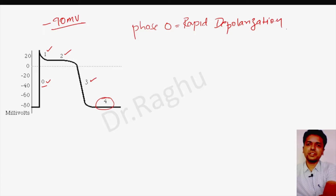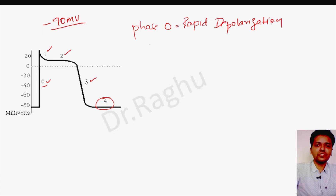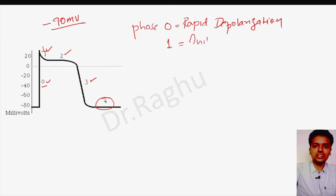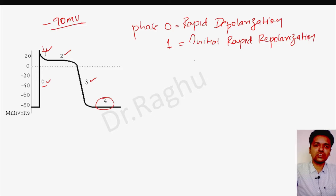Phase one is the phase of initial rapid repolarization. As we can see in the diagram, there is a little dip going towards the negative. This initial rapid repolarization does not last long — it is only for a very short duration of time.